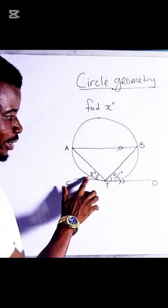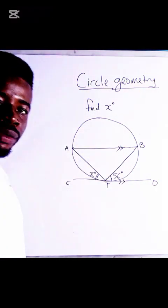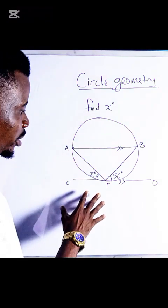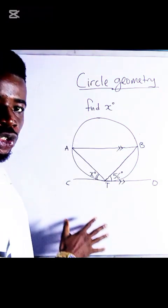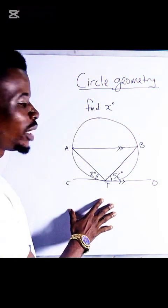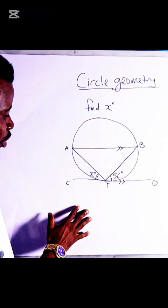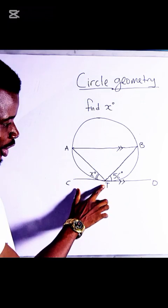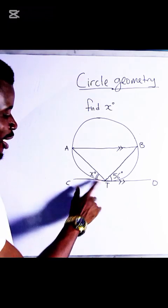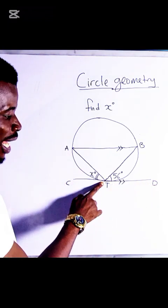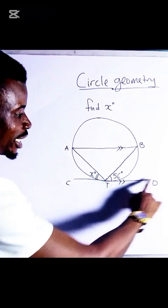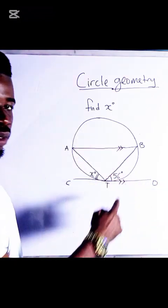We are asked to find x. This is circle geometry. To solve questions involved in circle geometry, we must be familiar with some theorems. If you look at this circle, a line CD touches the circle at T. A line that touches a circle at T is a tangent to the circle. It does not intersect, it touches.